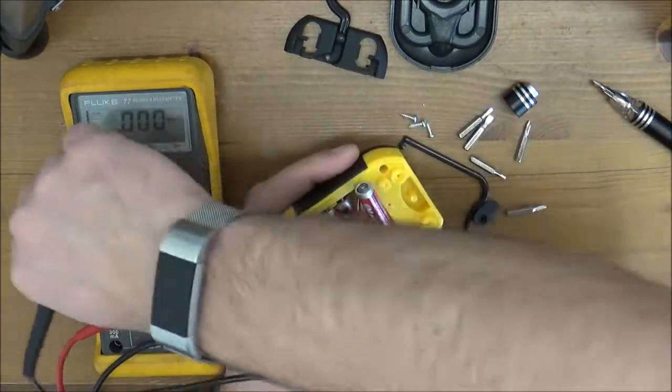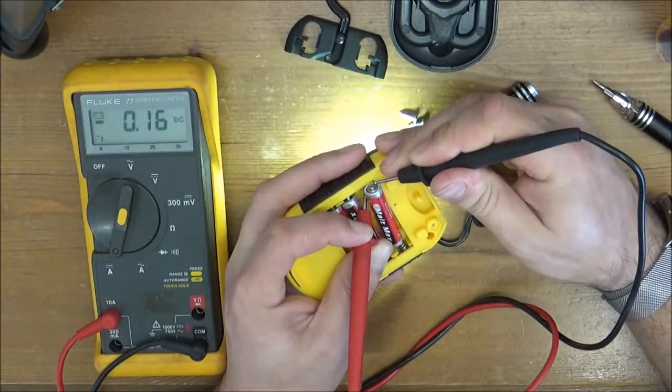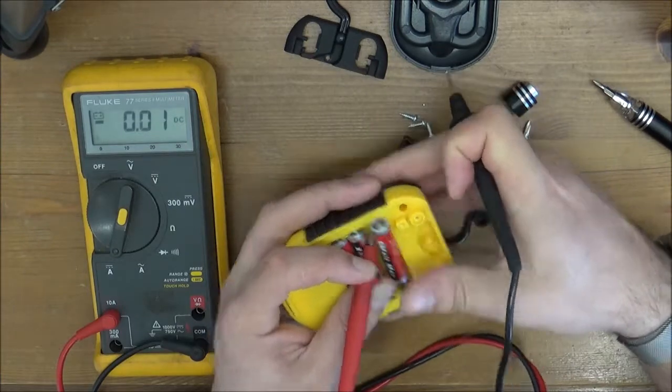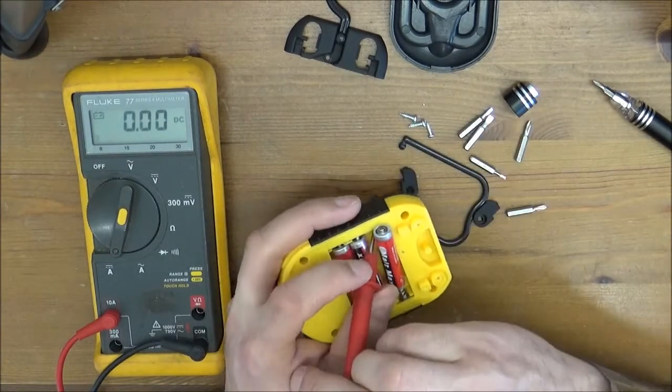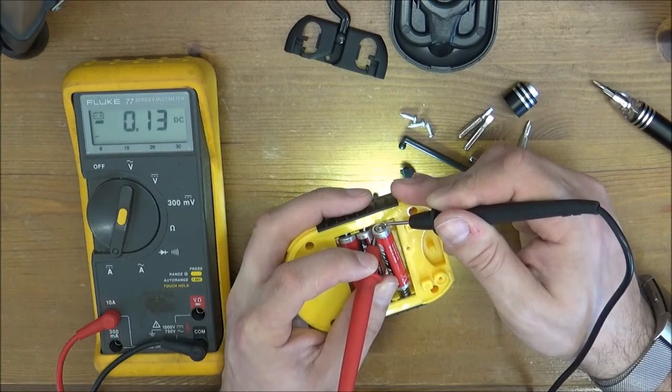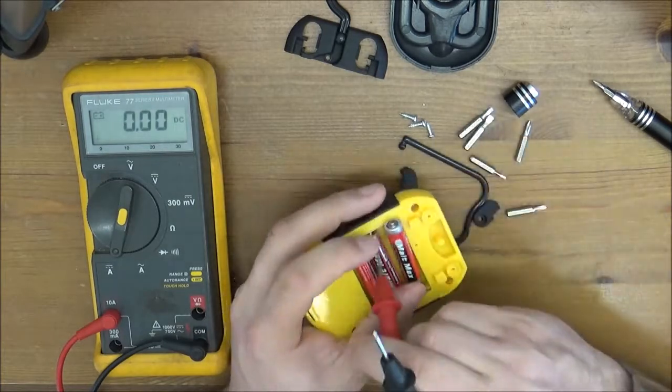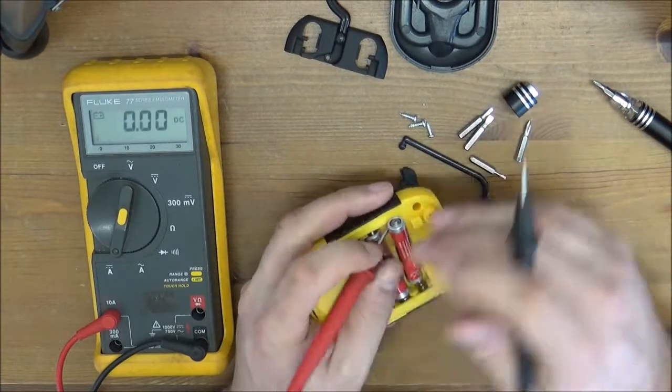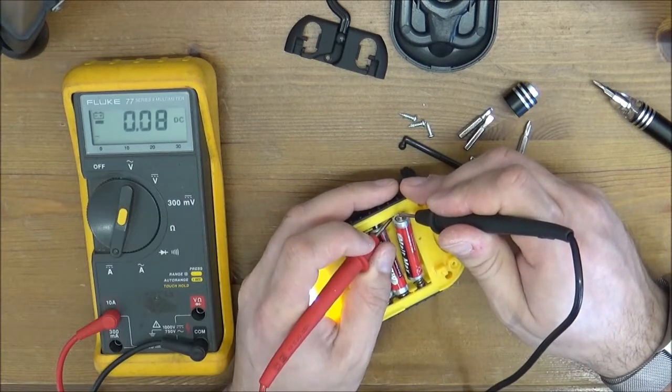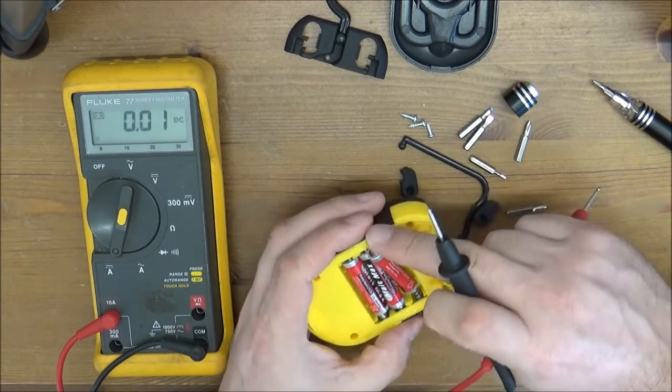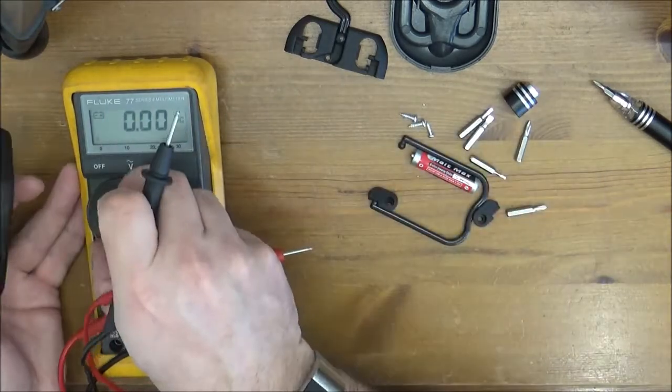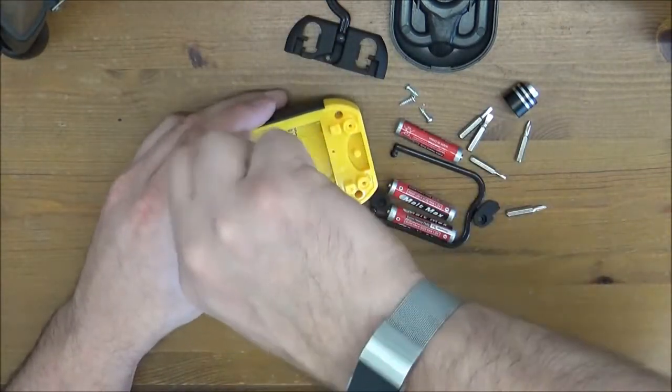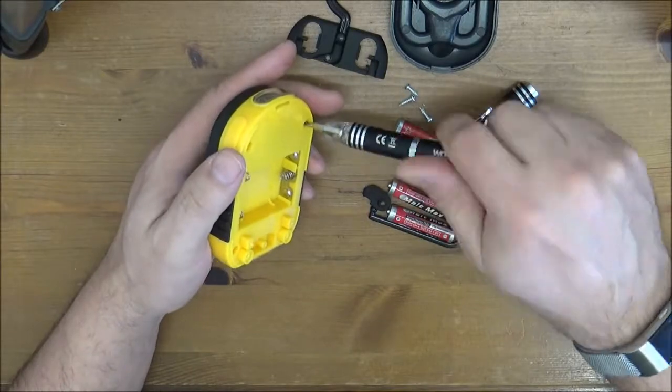Next we go through the various different settings for the torch. Here we can see that we're drawing 0.25 of an amp, which means we're at about one watt or so, maybe just a little bit above one watt, which means the batteries will probably last for a couple of hours.